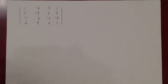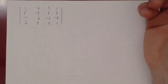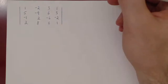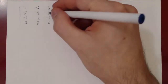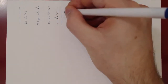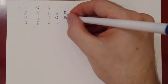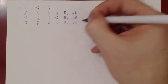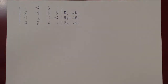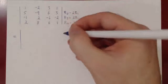Let's use this 3 to kill all of the 6s. We'll do row 2 minus 2 row 1, row 3 plus 2 row 1, and row 4 minus 2 row 1. We're using the row operation of adding a multiple of a row to a different row three times, and we know this will not change the determinant. We'll have a completely different matrix, but it will still have the same determinant.